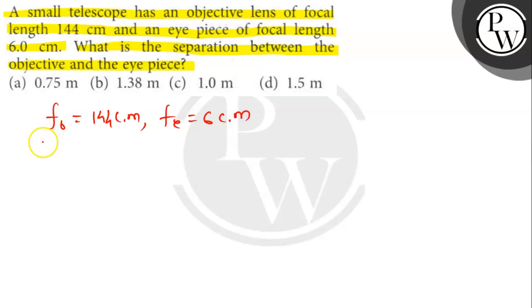For a telescope, the magnification is given as M equals FO by FE. So it is 144 by 6, which is 24. The separation between the objective lens and the eyepiece is given by D equals FO plus FE.